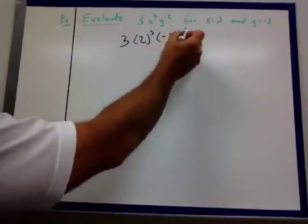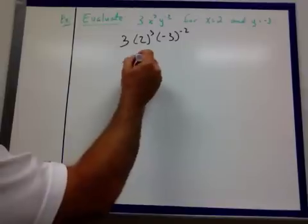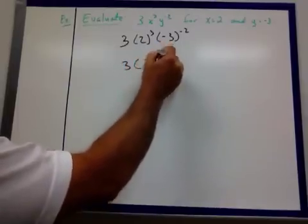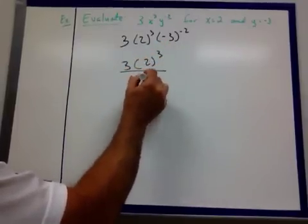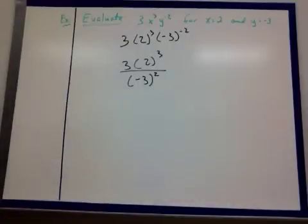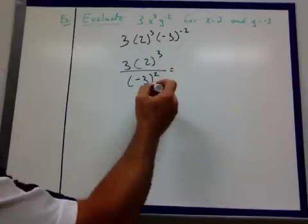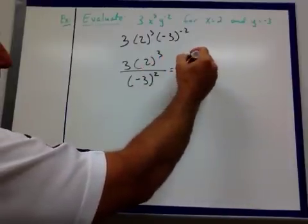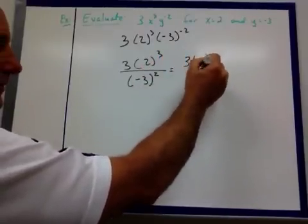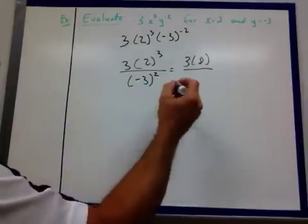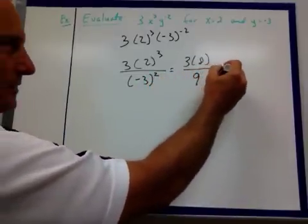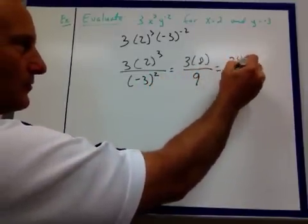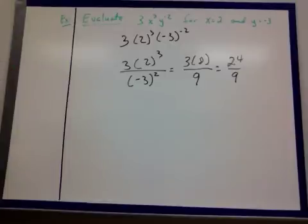This is a negative exponent, so now I'm going to put this down below. Before I do anything, I'll do that. Now we've got positive exponents. Now I can just simplify. 2 to the 3rd power is 8. Negative 3 times negative 3 is positive 9. So I'm going to get 24 over 9, and I can simplify that down. 3 goes into both of them.